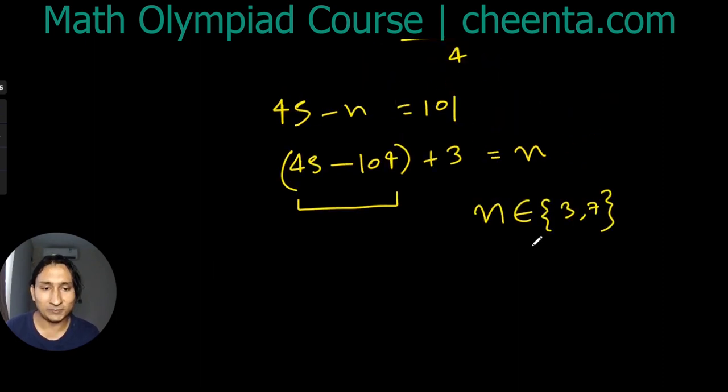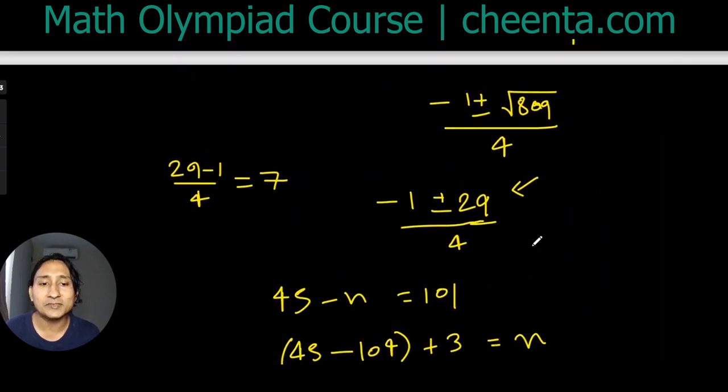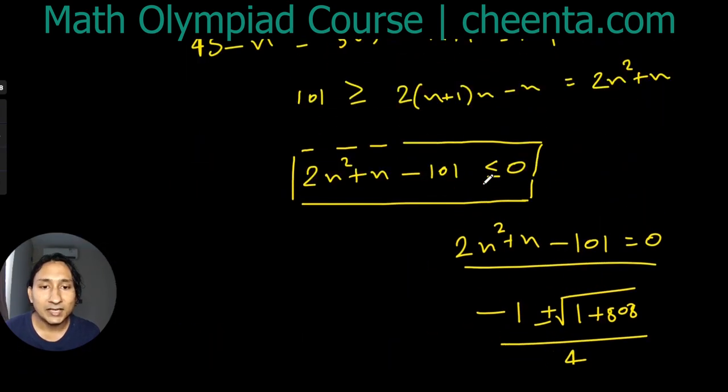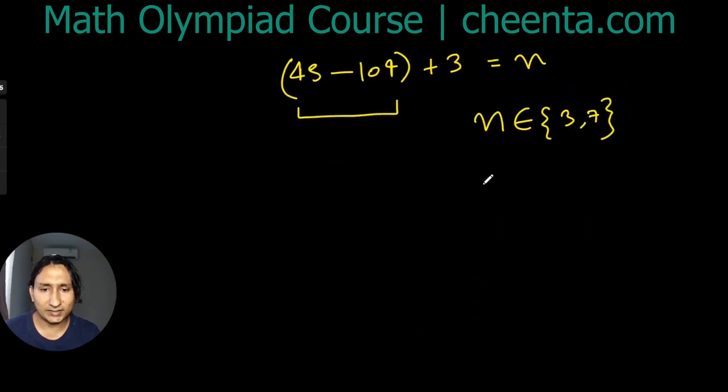Anyway, so let's see what we can do with both of them. Can n be equal to 7? I don't think so because 2 into 7 square... 7 square is 49. What is 2 into 7 square?